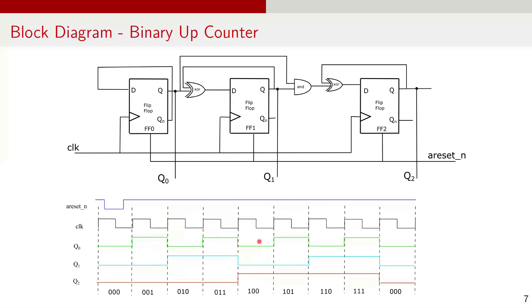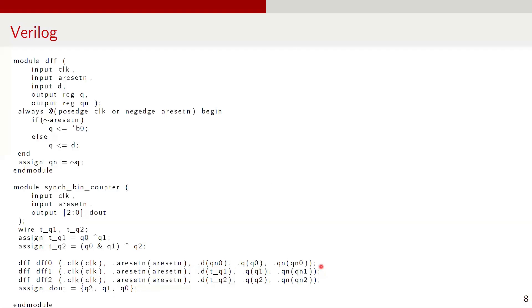In the fourth clock pulse, FF0 toggles from 1 to 0. For FF1, the XOR of FF0 Q and FF1 Q is 0, so FF1 toggles from 1 to 0. FF2 toggles because FF0 Q and FF1 Q are both 1, making the AND gate output 1; when this is XORed with FF2 Q (which is 0), the D input is 1, so FF2 Q becomes 1 and the output is 100. The counter continues to increment the binary count from 000 to 111 and then wraps back to 000. Here is the Verilog code for the 3-bit synchronous counter.